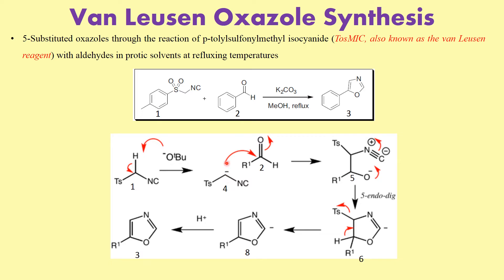This newly generated carbanion attacks the aldehyde of the starting material to generate intermediate species 5. What follows is a cyclization — as per Baldwin's rules, this is a 5-endo-dig cyclization — resulting in the formation of intermediate 6. Then elimination of the tosyl group takes place: the lone pair of electrons comes back and the tosyl group, being a good leaving group, leaves. This gives us intermediate 8.